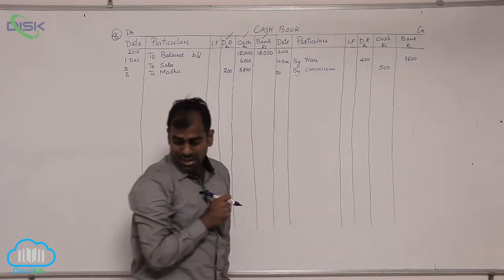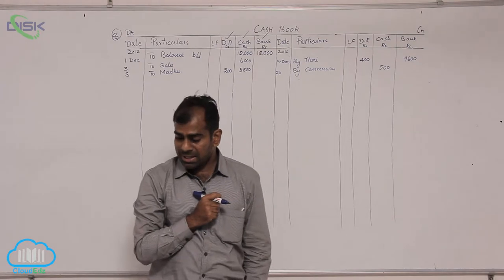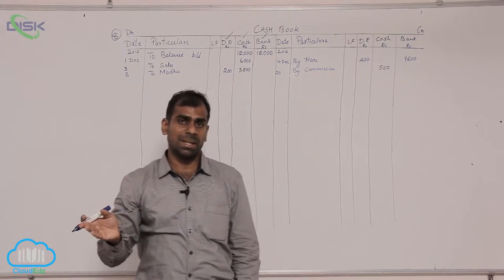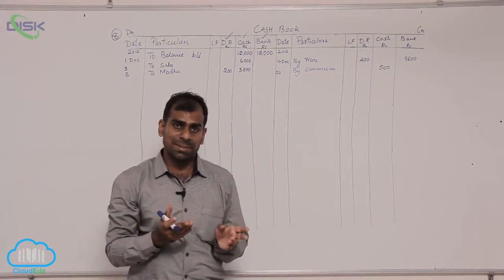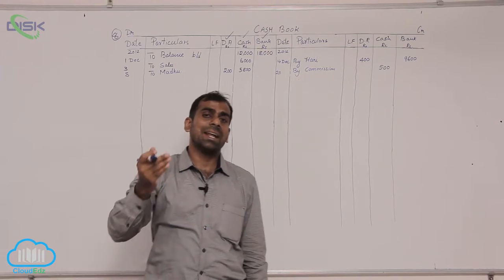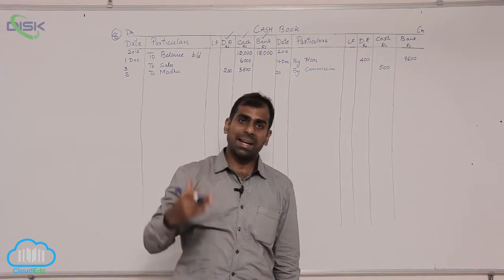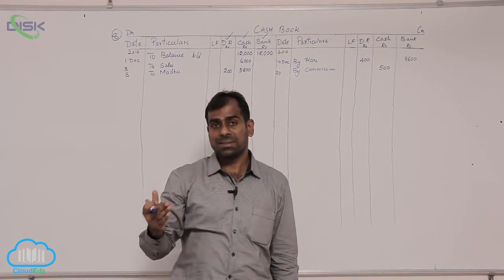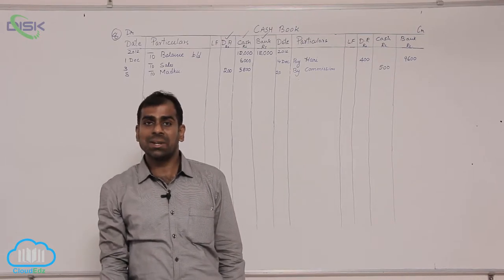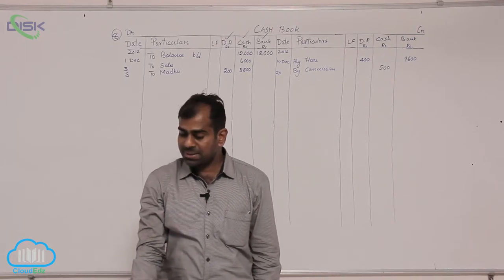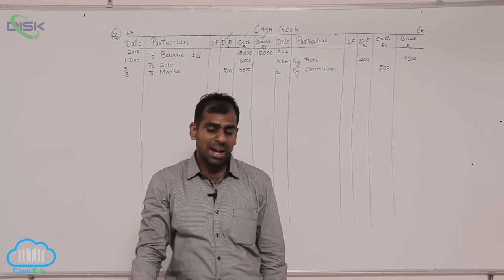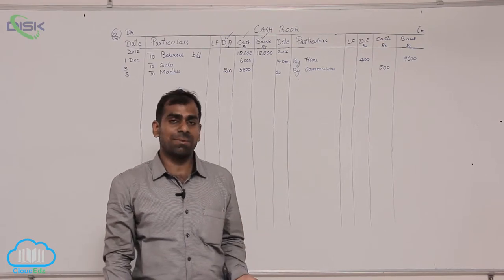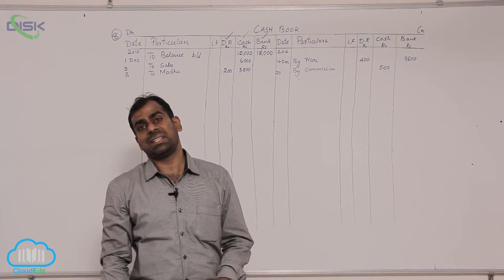The next transaction is on 23rd: a check received from Govind, allowed discount to him. Whenever you receive a check you should also read the next transactions till the end and confirm whether any date for check deposited is given. If you see this problem, on 23rd you are receiving a check from Govind and the next transaction on 25th states that Govind's check was deposited into bank — meaning on 23rd you got the check from Govind and on 25th you are depositing it in the bank.